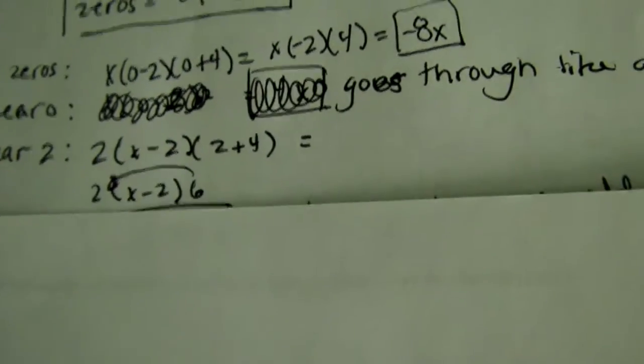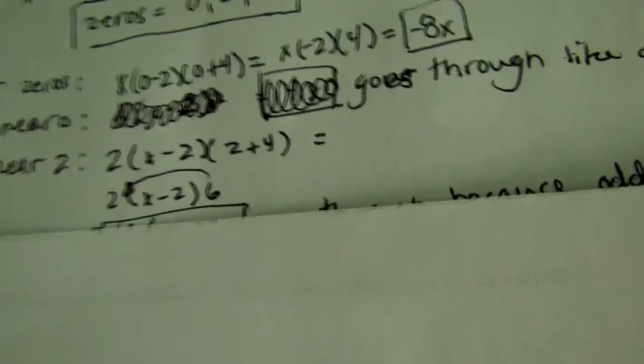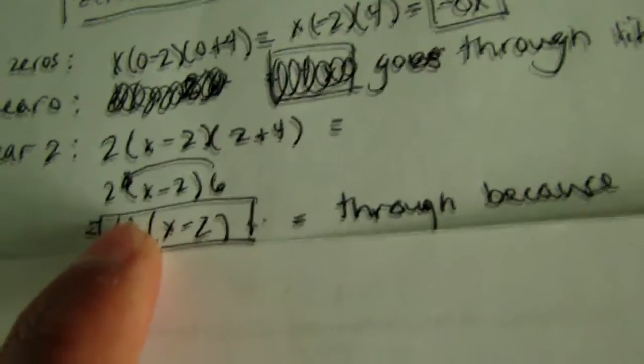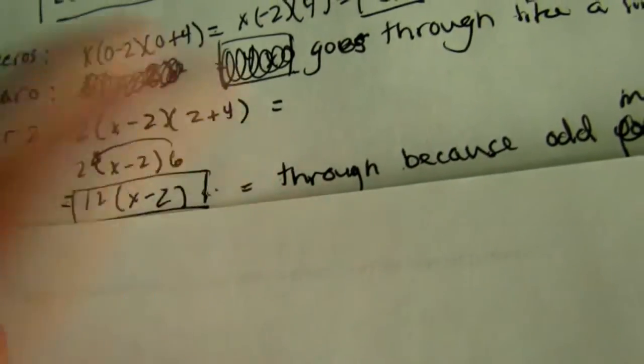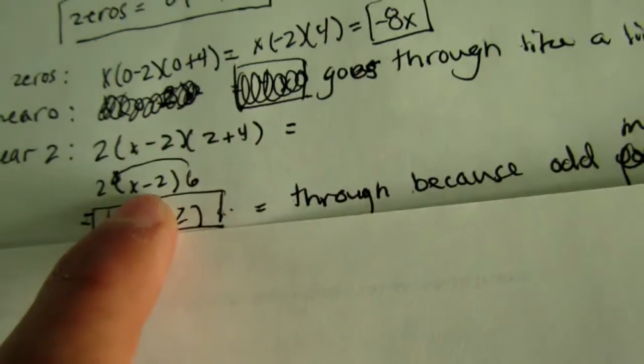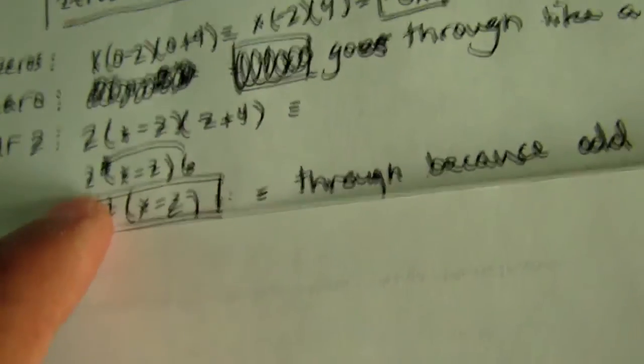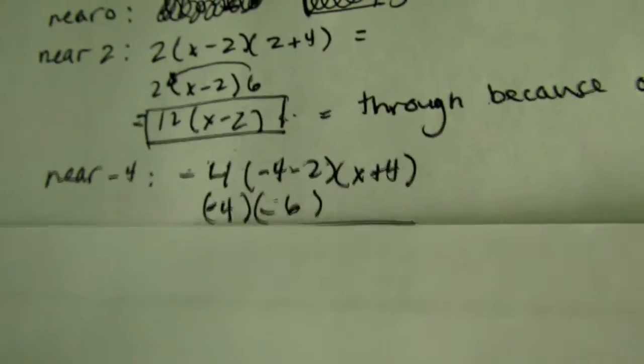So, we simplify, and we get 2 and 6, and we want to multiply those because we're timesing all that. And we should get 12 times (x - 2). And it goes through, because there's a 1 multiplicity.